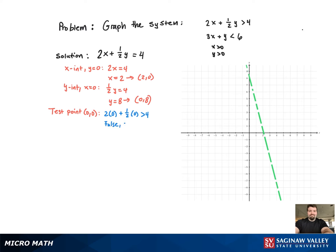So we're going to shade the region that does not contain (0, 0), which is above the line.